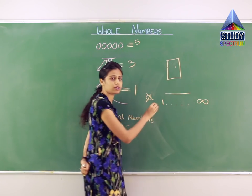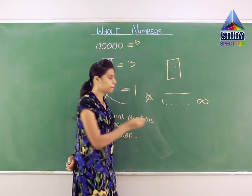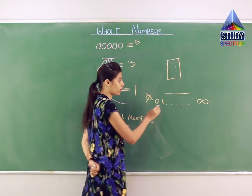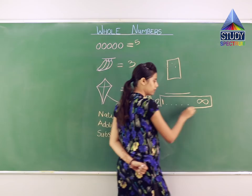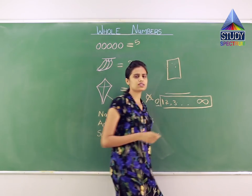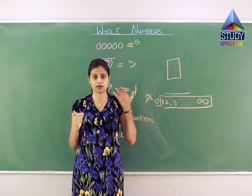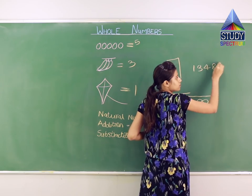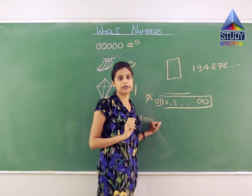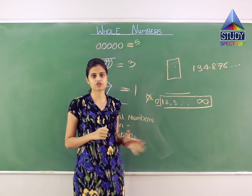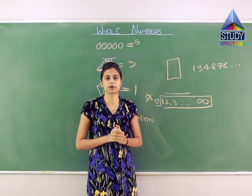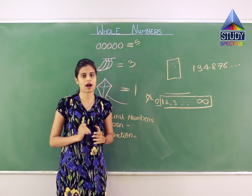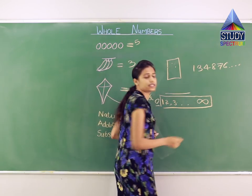The natural number starts from 1 because 1 is a countable figure. Before 1 comes 0, but you cannot count 0, so natural numbers start from 1 and go till infinity — including 2, 3, and so on. Infinity means it can extend to any limit with no end. So the definition of natural numbers is: they are countable numbers which start from 1 and go on till infinity.